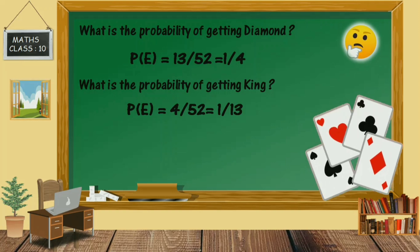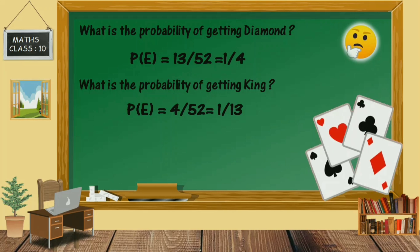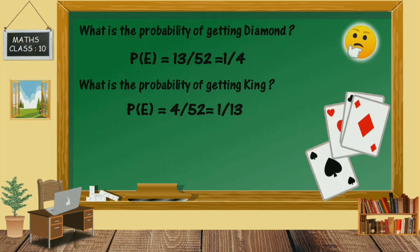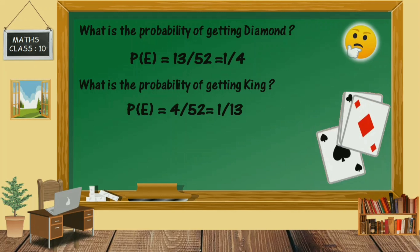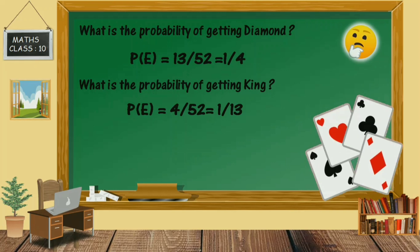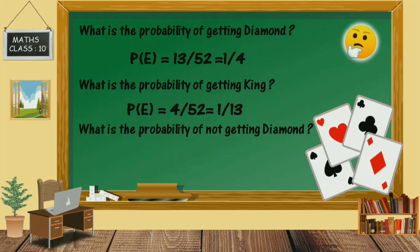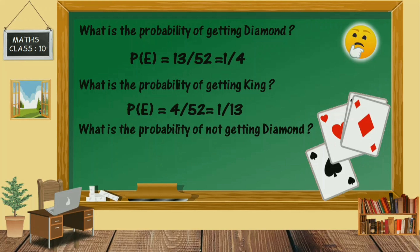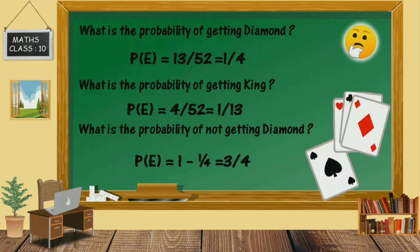Now let's shuffle the deck of cards again. If you pick up a card, what is the probability of not getting a diamond? The probability of not getting a diamond equals 3 by 4. Using the formula P(E bar) equals 1 minus P(E), that is 1 minus 1 by 4, which equals 3 by 4.